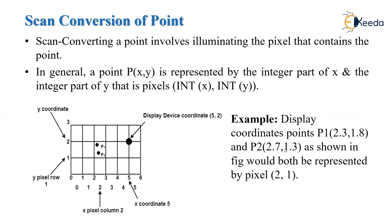Both coordinate values of points p1 and p2 are converted into integer values by performing the round-up operation. So here we get the same value for both points, that is 2, 1, and we can represent it on the screen.